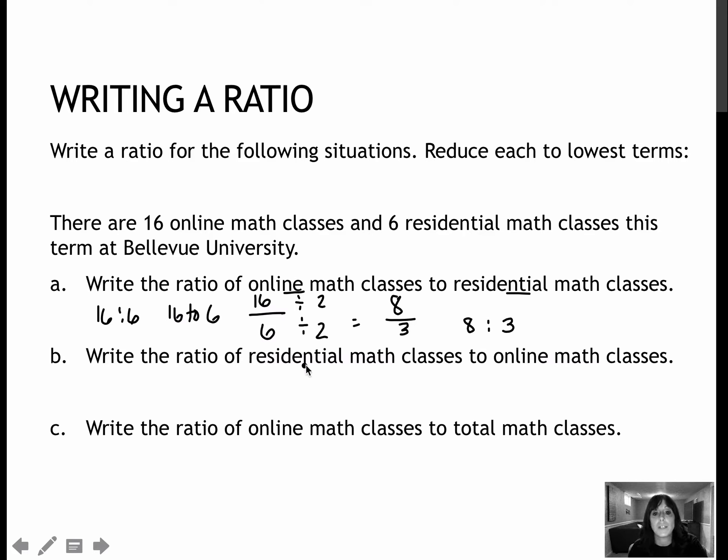Now if we're writing the ratio of residential to online, notice now they've switched the order. So residential to online would be 6 to 16, we would still reduce the same way, now it's 3 to 8. So before it was 8 to 3, now it's 3 to 8, same idea.